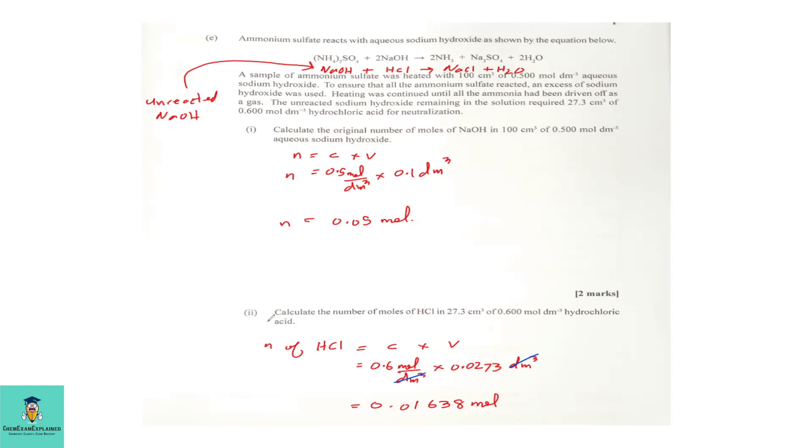Part 2. Calculate the number of moles of hydrochloric acid in 27.3 cm³ of 0.600 moles per dm³ hydrochloric acid. Again, we use the same equation to find the number of moles of hydrochloric acid. So the concentration is 0.6 moles per dm³ times the volume of 27.3 cm³, which we converted to dm³ by dividing by 1,000. So our answer is 0.01638 moles.